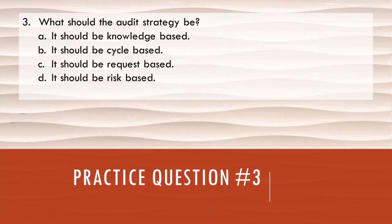Number three: what should the audit strategy be? A. It should be knowledge-based. B. It should be cycle-based. C. It should be request-based. Or D. It should be risk-based. A — knowledge-based — is not correct because our audit team does not know everything. Sometimes management has to have outsiders or third parties come in to inform them about external environments and opportunities outside the company. The audit strategy should not be knowledge-based because during audits, we typically learn as we go along.